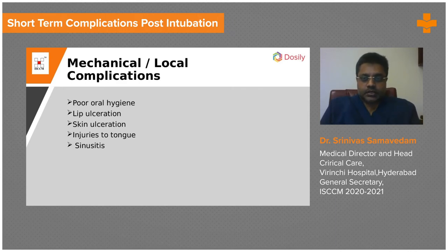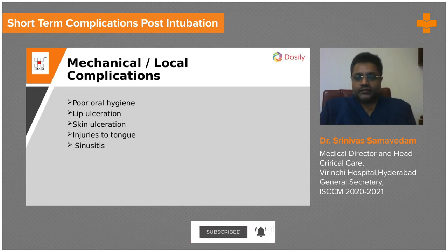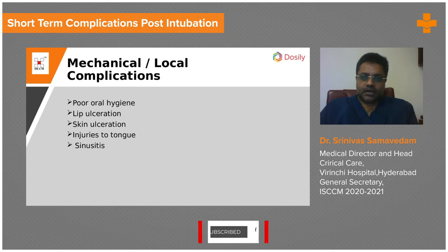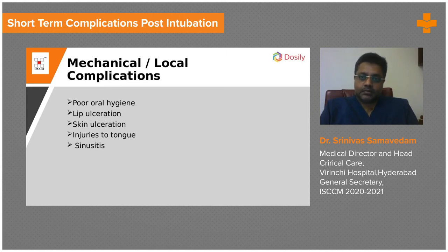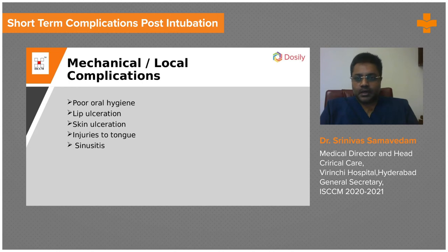Sinusitis is usually caused not by the endotracheal tube, but by the nasogastric tube which you insert in the majority of intubated patients. Nearly 90% of patients who have a nasogastric tube for longer than 72 hours will have some form of maxillary sinusitis. As you leave the tube in place longer, the chances of this sinus infection trickling backwards as a post-nasal drip and seeding the lungs with a resistant bug is very high. Nosocomial sinusitis is an independent predictor of the prevalence of ventilator-associated pneumonia.